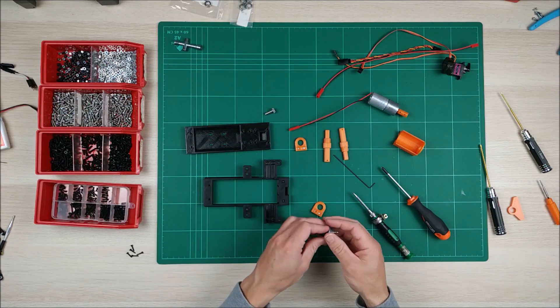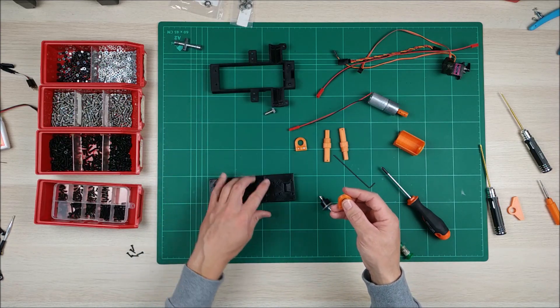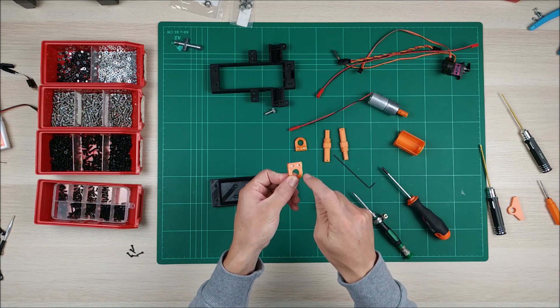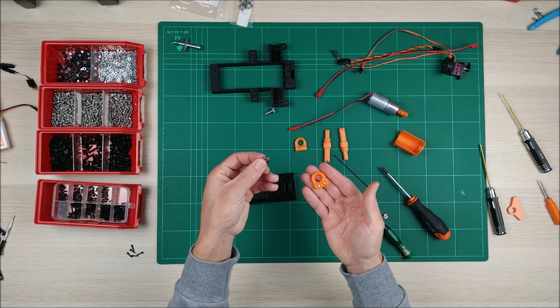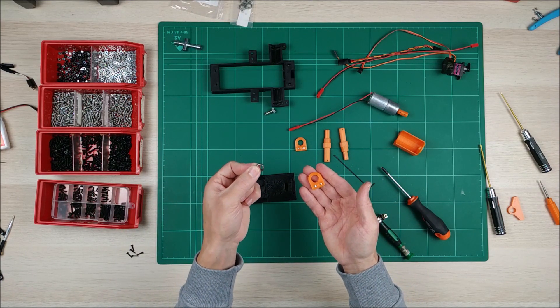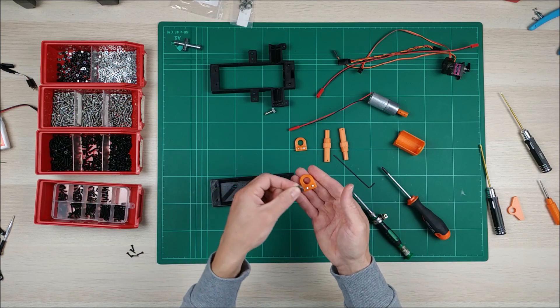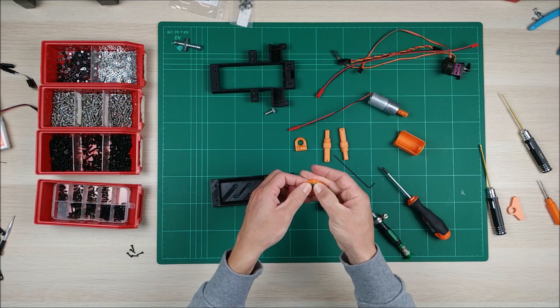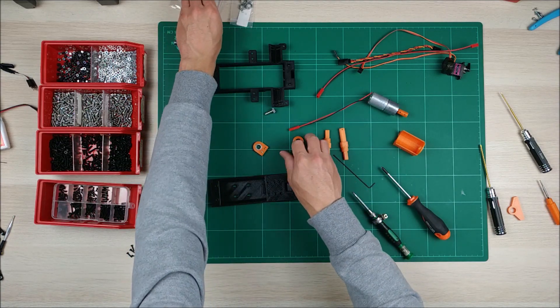First thing that we can do is we take this chassis part and we insert these M3 nuts here. We're also going to use these bearings. These are the same as the front wheel bearings and we just insert them there, and another one here.